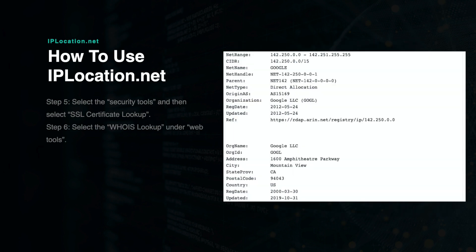Under Web Tools, you can use the WHOIS Lookup. Type in the website domain or IP address and press Enter. You will be shown a list of registration information about the website, such as the organization or business name, the address, the net range of IP addresses, country of origin, and other important details about the website.